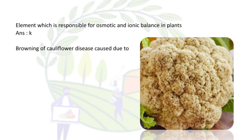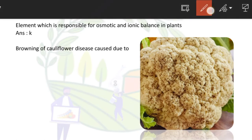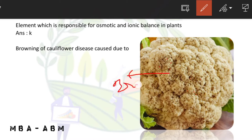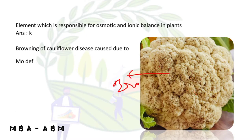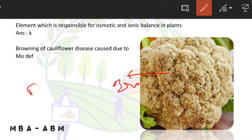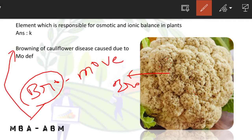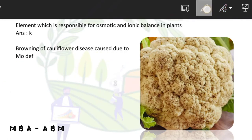The browning here — you can see these are the brown spots — is caused due to molybdenum deficiency. You can remember it like this: 'bro-mo' — bro for browning and mo for molybdenum deficiency.